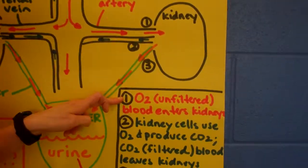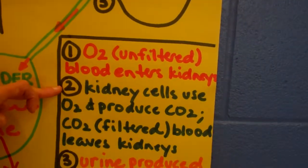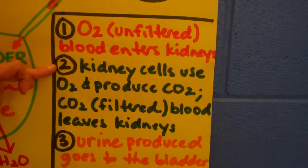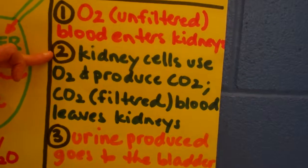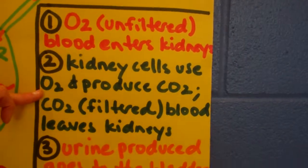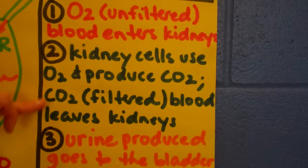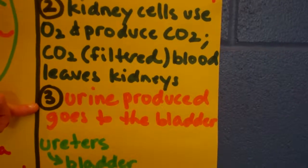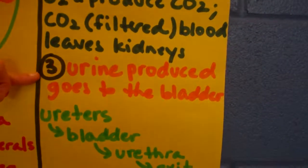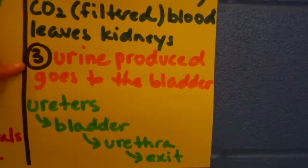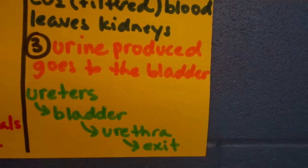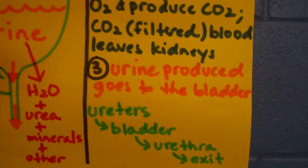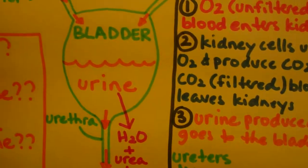So that's step one. The blood coming back is now CO2-rich blood that has been filtered. A third thing that happens is that the excess liquids and waste go towards the bladder, and of course through the ureter, the bladder, and the urethra, and exit the body.